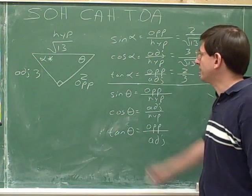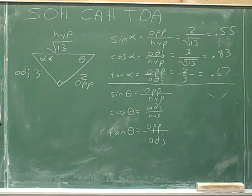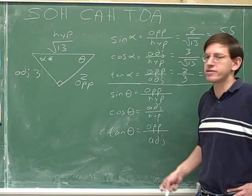Okay, well, good job team. We figured out the sine, cosine, and tangent for alpha. But now we have to go on to our next task, which is to figure out the sine, cosine, and tangent for theta.